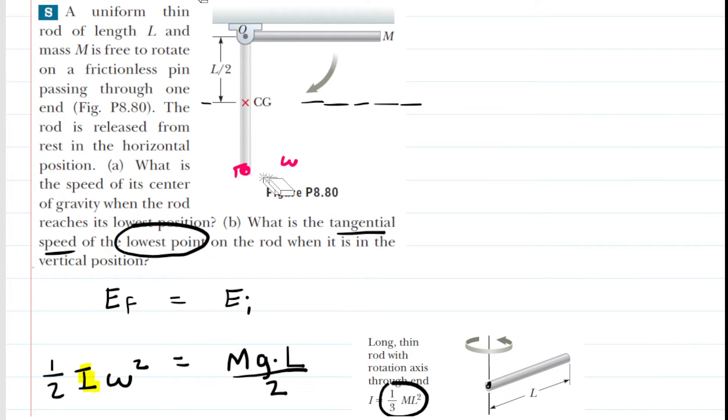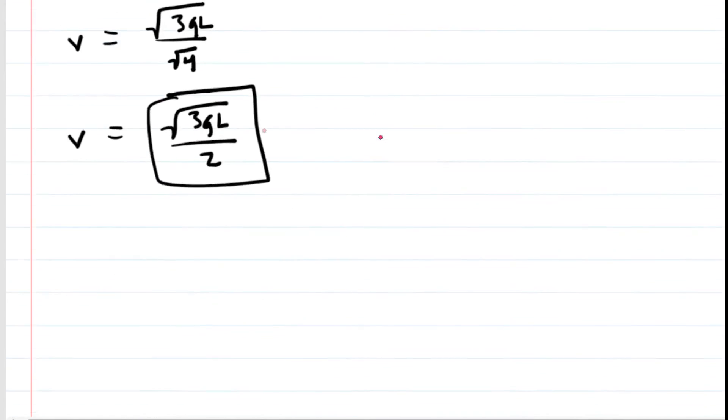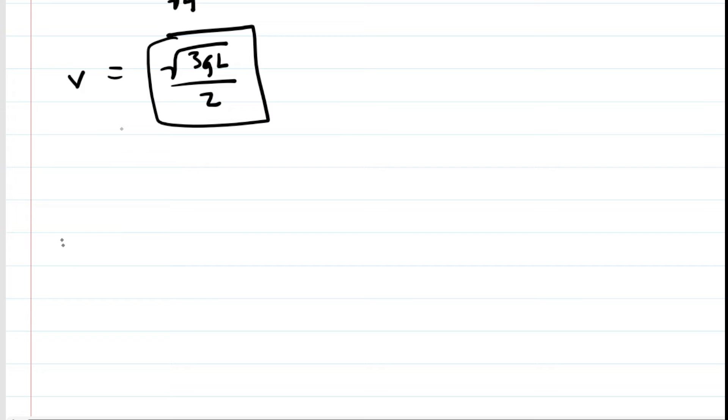But again, what differs is the value of R. So we're going to measure R from the lowest end of the rod up to that pivot point up there. That would encompass the entire length of the rod. So in other words, R is going to equal L in that case. So moving all the way down here for part B, we can still say that the speed is equal to R times omega.